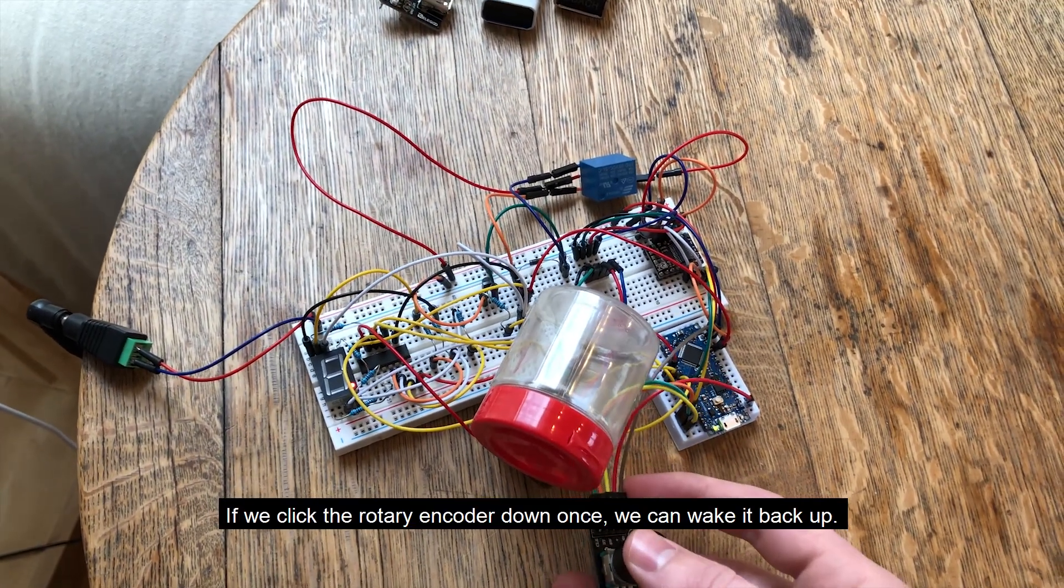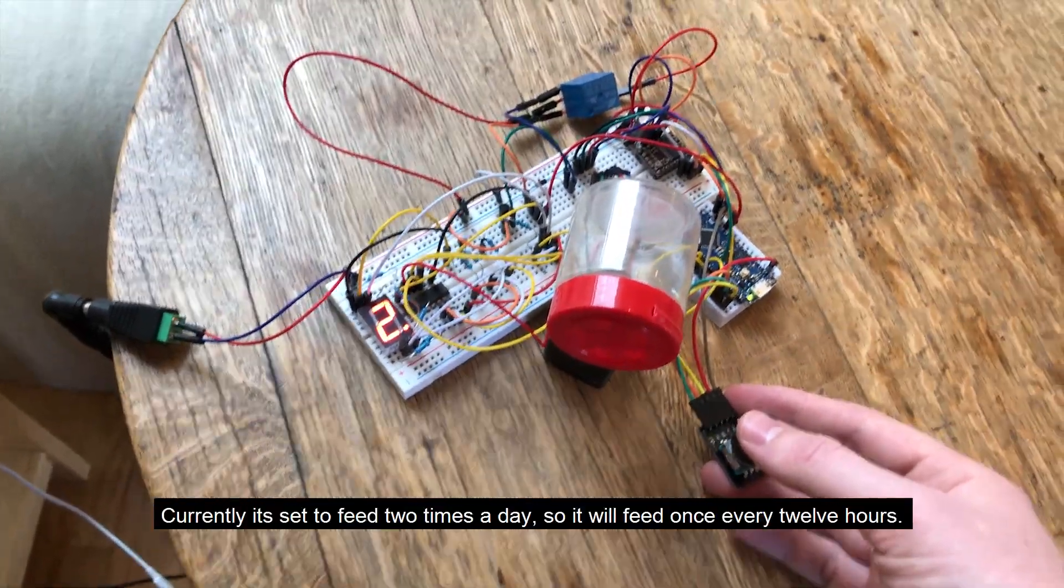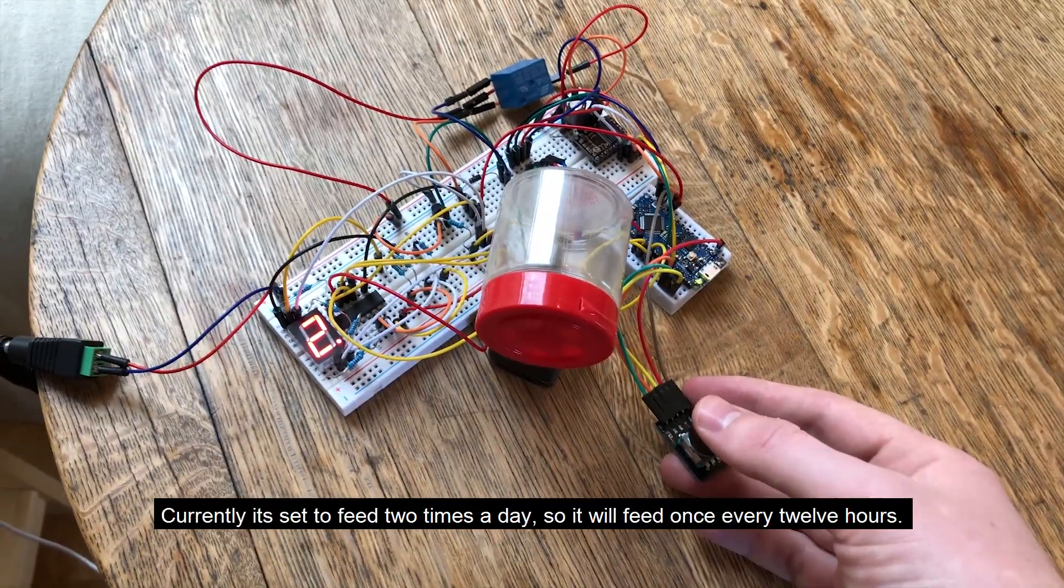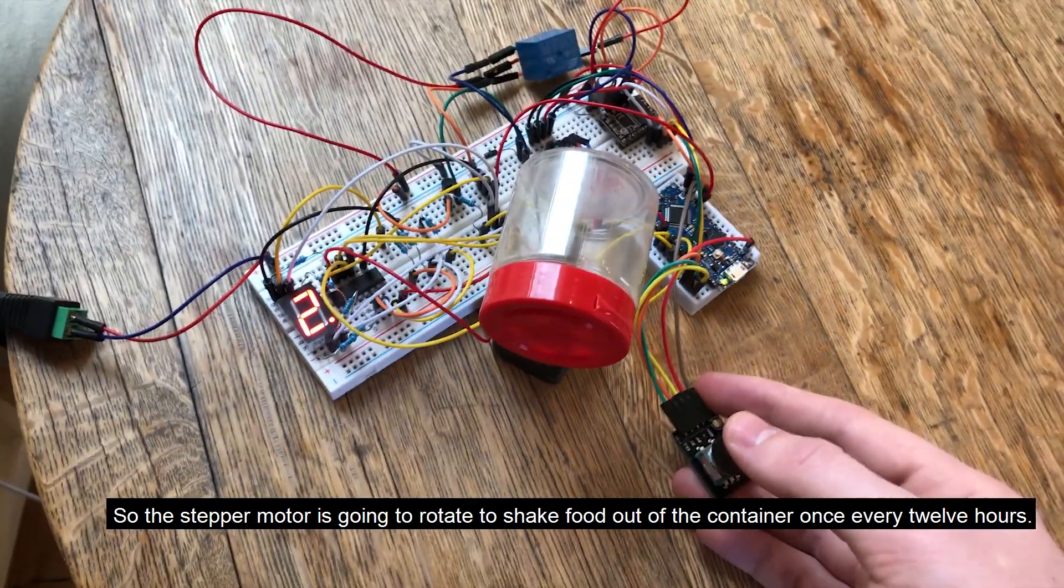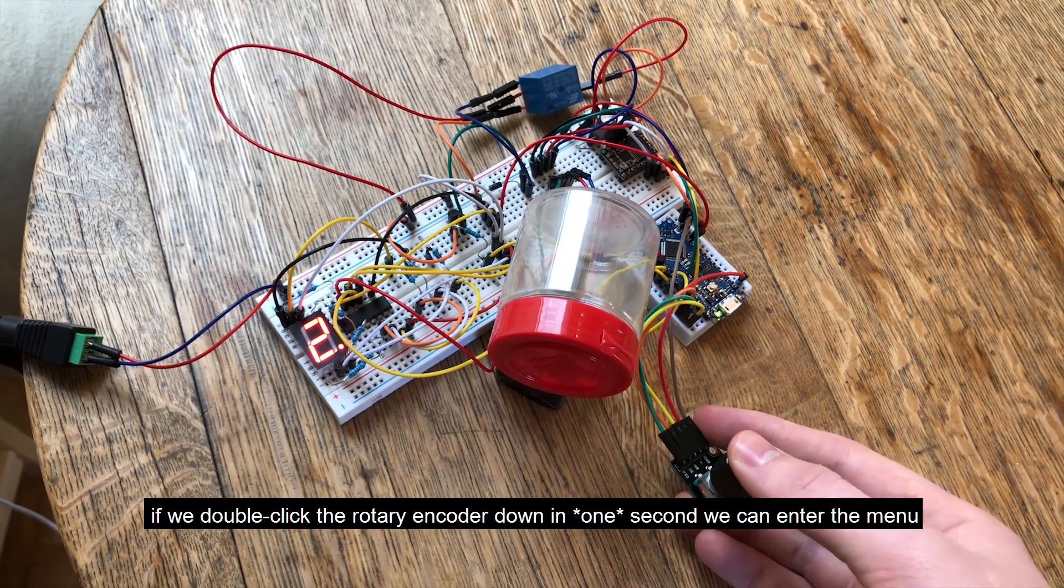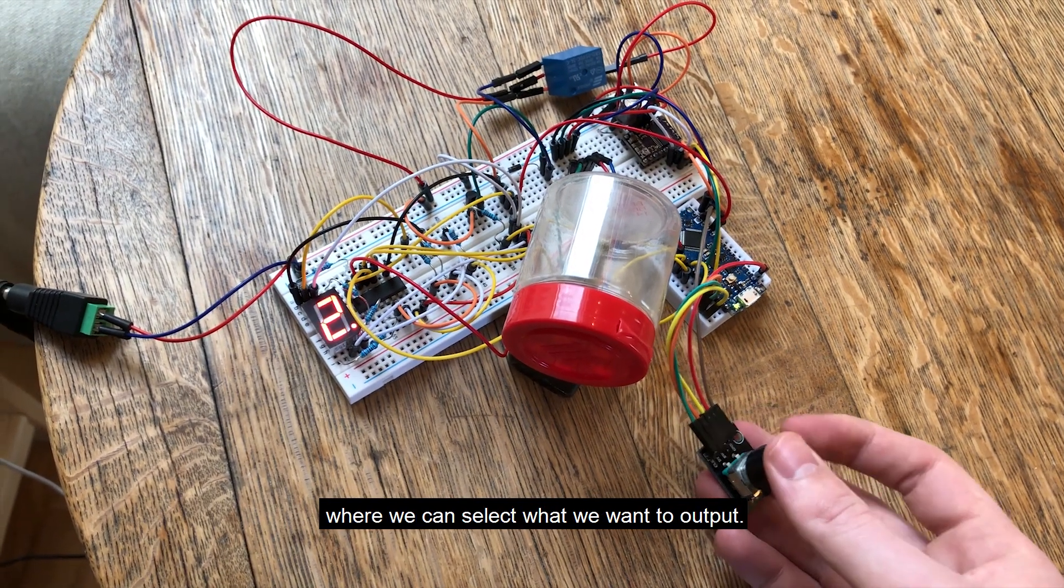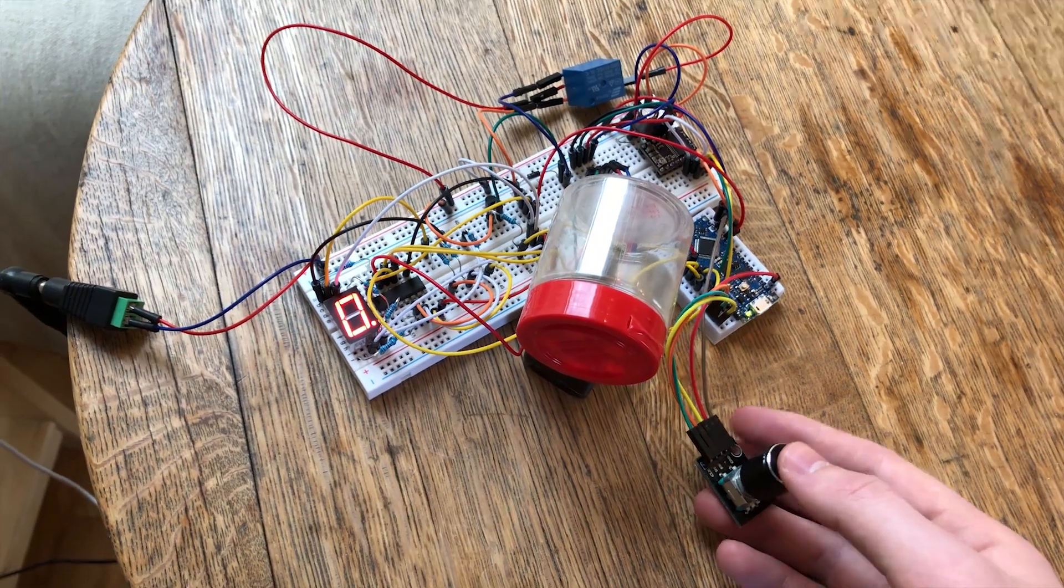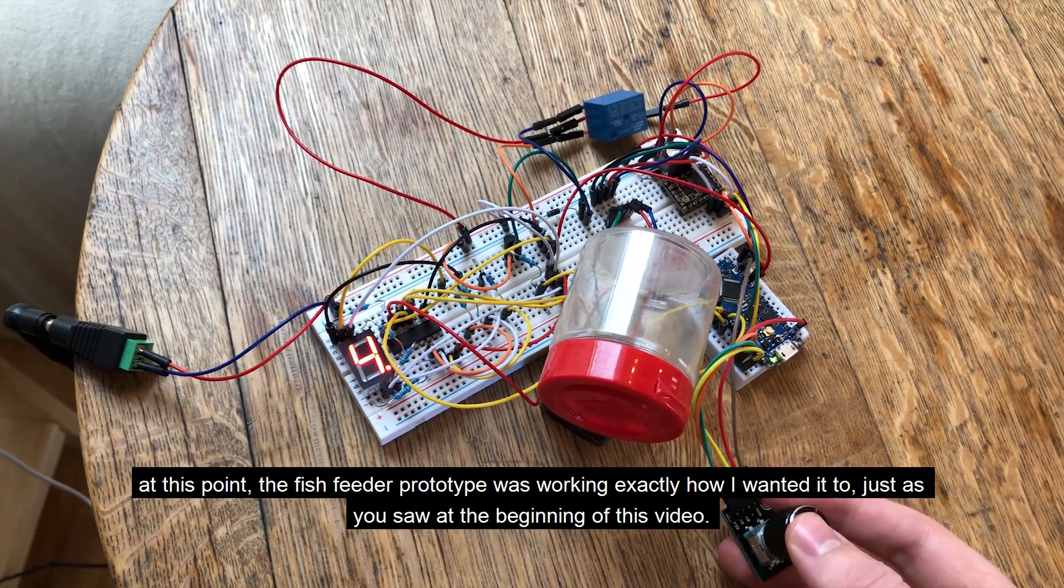If we click the rotary encoder down once, we can wake it back up. Currently it's set to feed two times a day, so it's going to feed once every 12 hours. The stepper motor is going to rotate to shake food out of the container once every 12 hours. If we double click the rotary encoder down in two seconds, we can enter the menu or we can select what we want to output. At this point, the fish feeder prototype was working exactly how I wanted it to, just as you saw at the beginning of this video. It was time to start thinking about how to put it into a container.